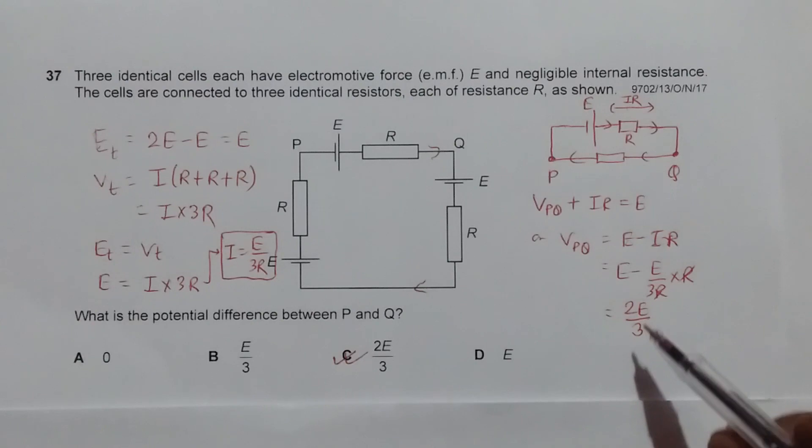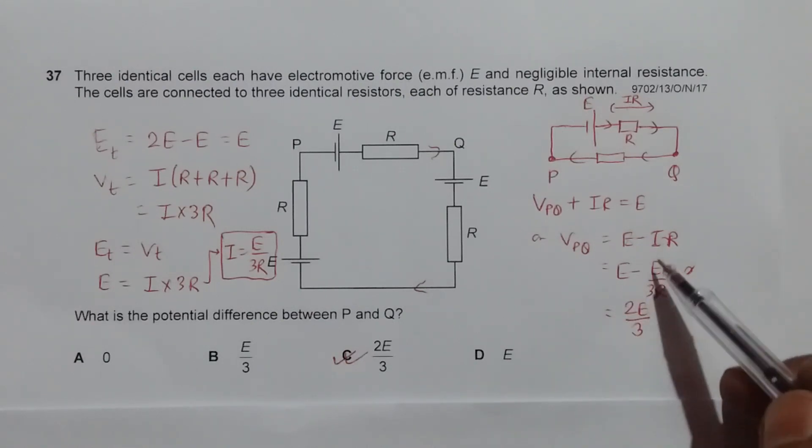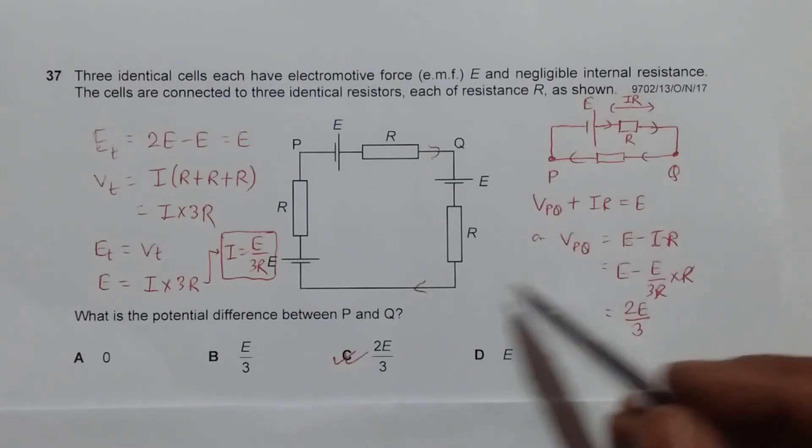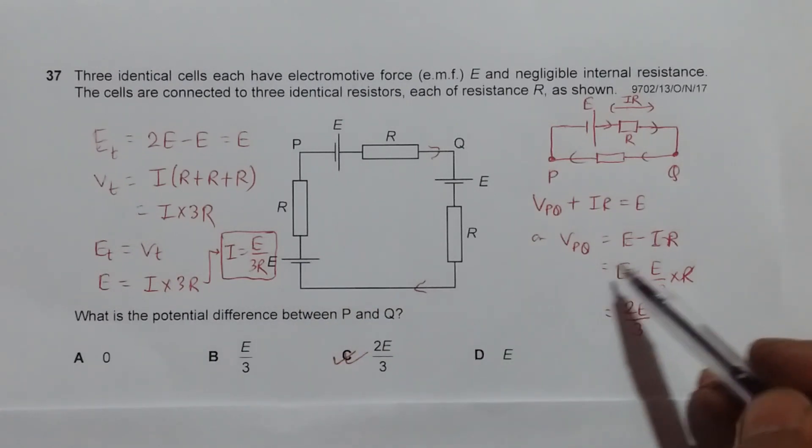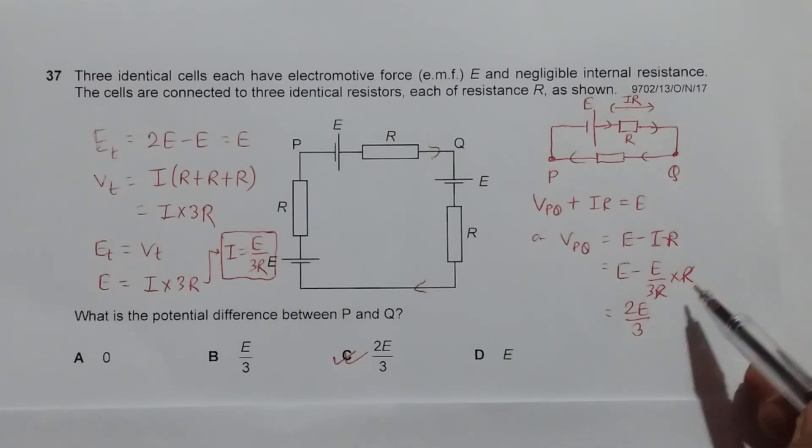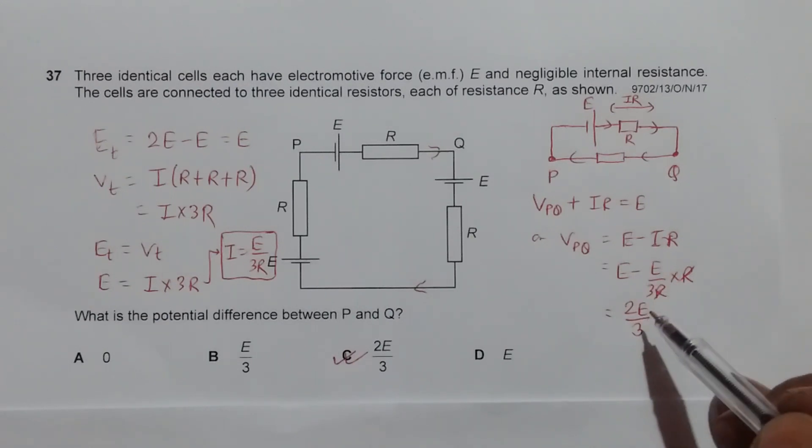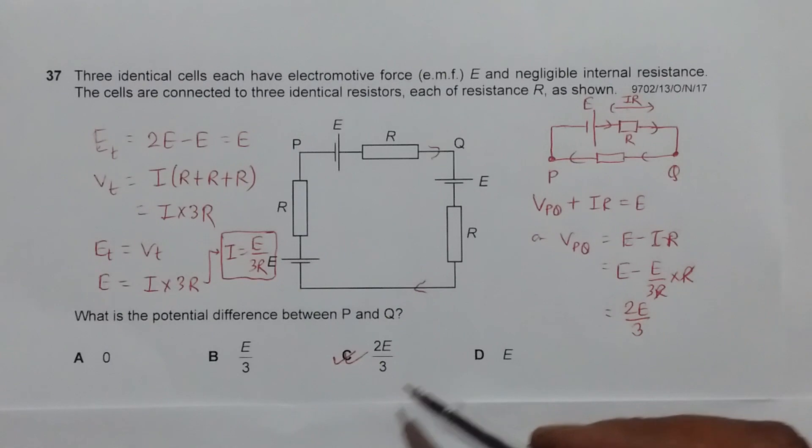Which gives me E minus, when I use the value of I from this side, it will be E by 3R into R. And the whole thing will be, when I do LCM and everything, it will be 2E by 3. So the correct choice for this question will be 2E by 3.